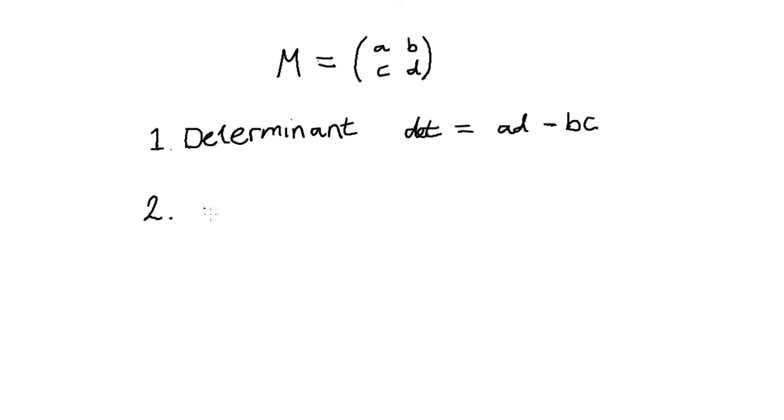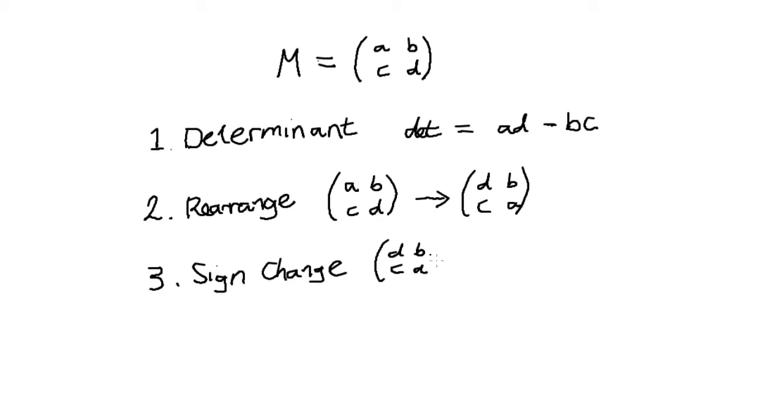Step 2, rearrangement. The position of A and D are reversed. Step 3, sign change. The value of B and C are multiplied by minus 1.